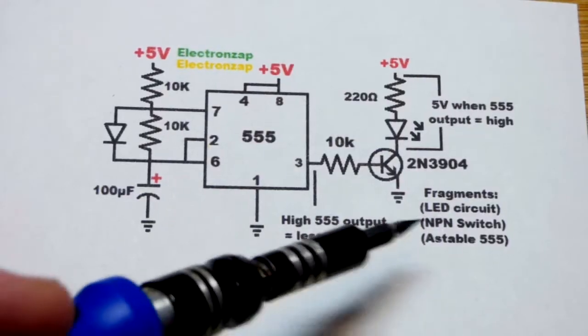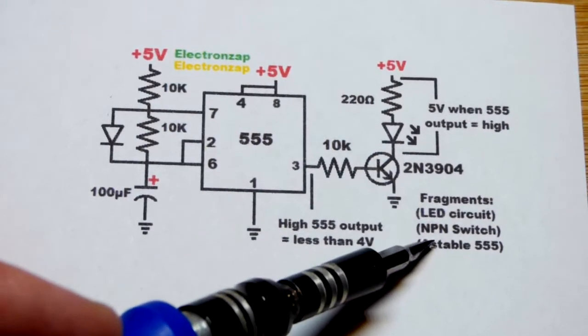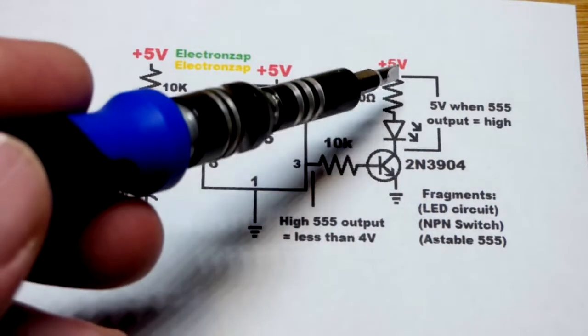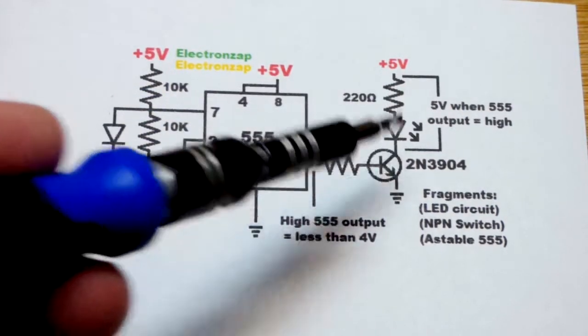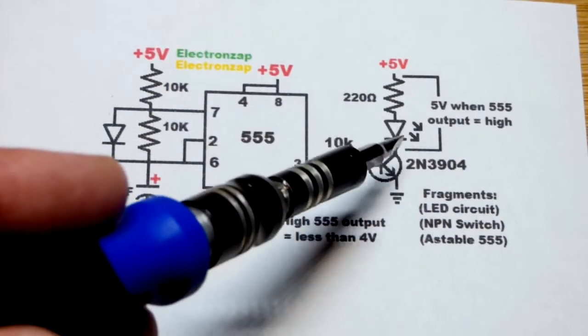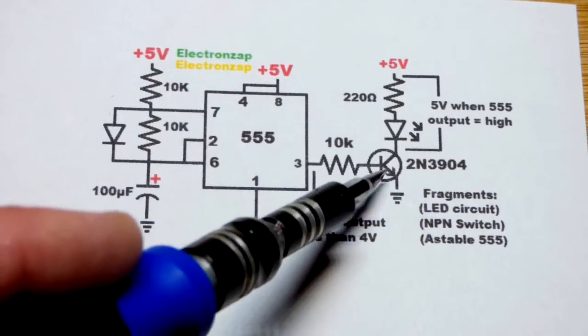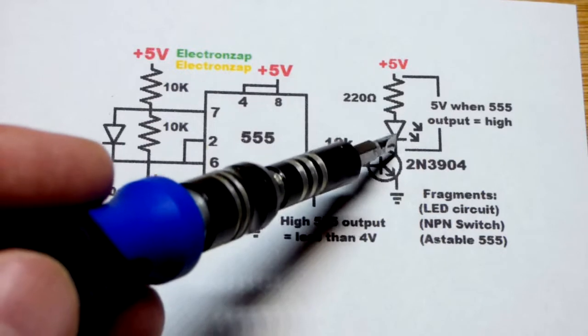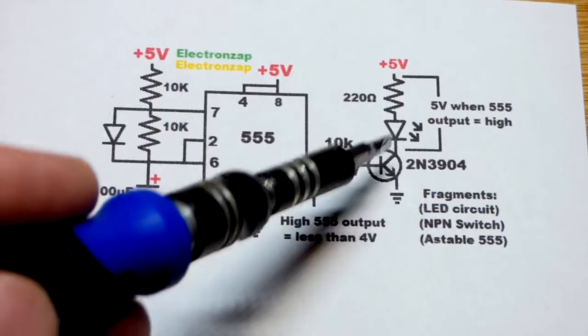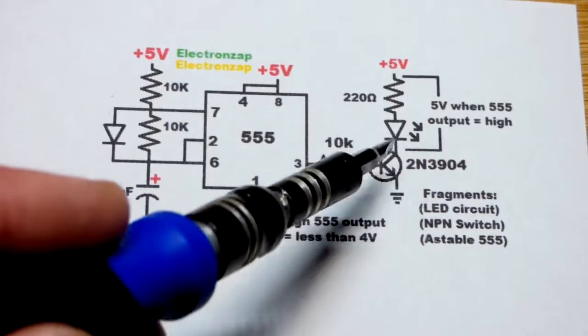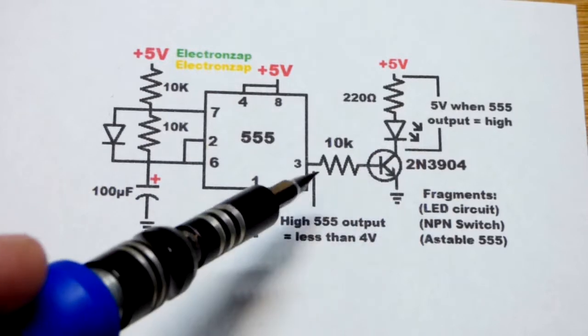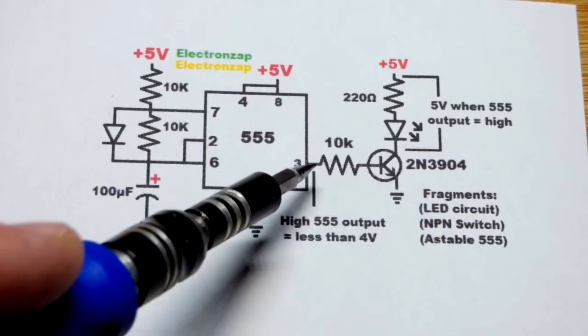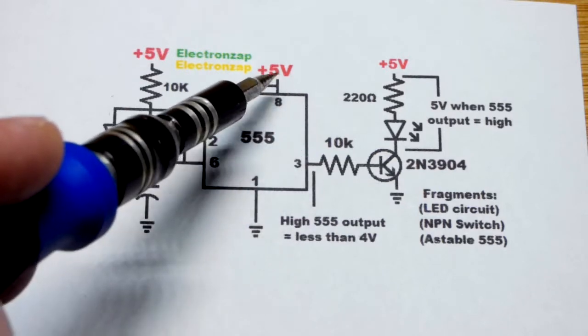These are the three circuit fragments we're looking at. I did videos on each one of these. As a quick review, we need current to go through the LED for it to light up. To control current going through the LED, we have an NPN bipolar junction transistor switch in series from collector to emitter. To get the collector to emitter conducting, we need a small amount of current from base to emitter. That will happen when the output is high.